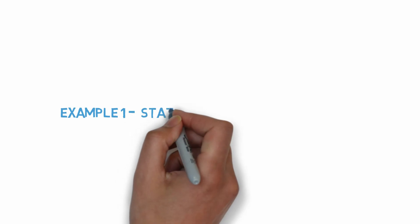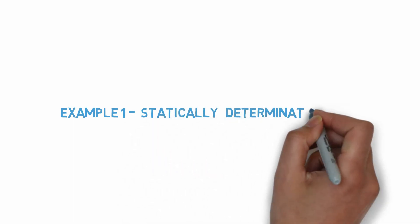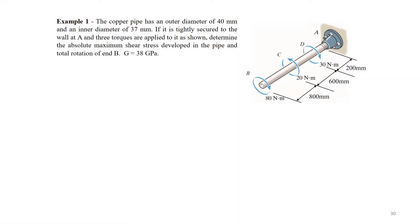Now we're going to look at an example with statically determinate shaft. The copper pipe has an outer diameter of 40 mm and an inner diameter of 37 mm. If it is tightly secured to the wall at A, and three torques are applied to it as shown,